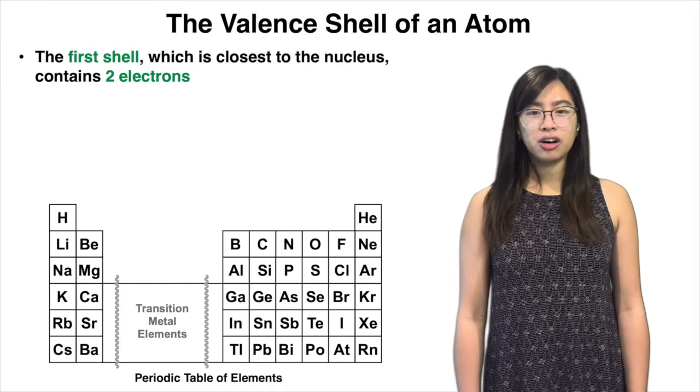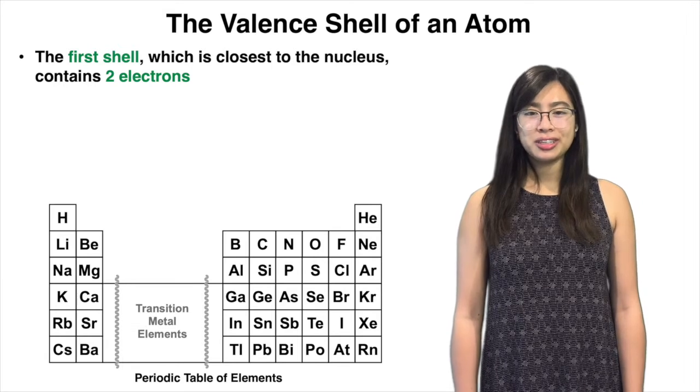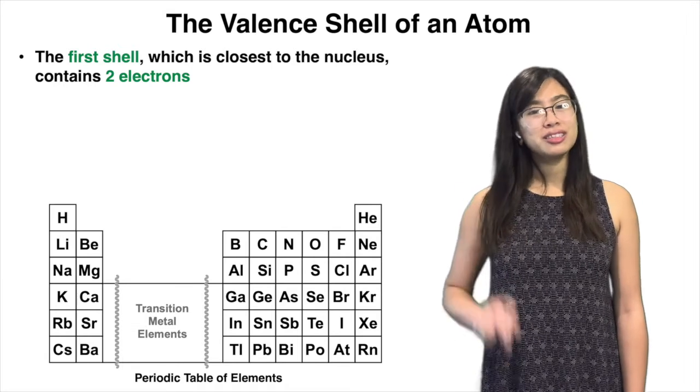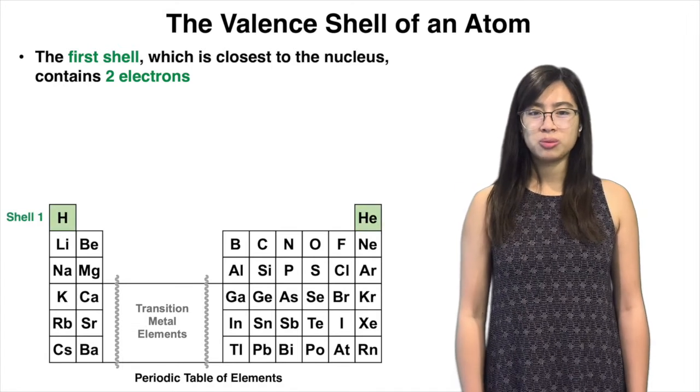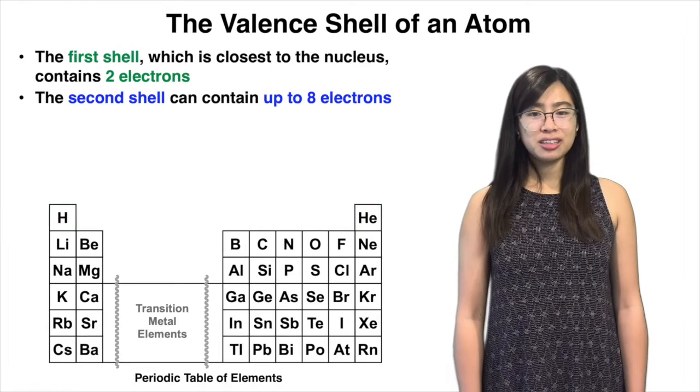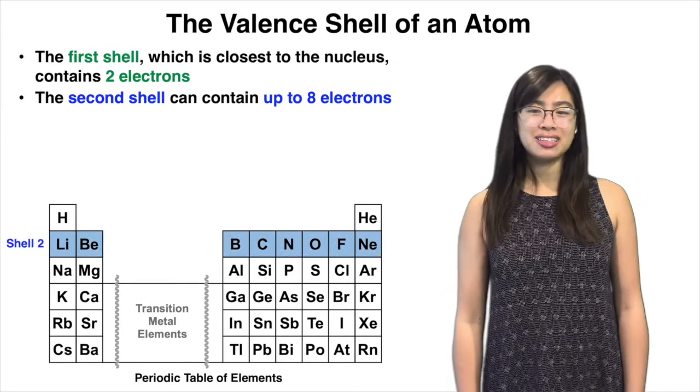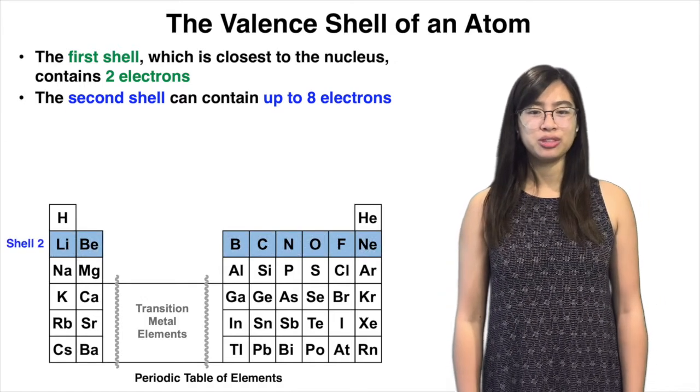Electrons exist in what are called principal shells. The first shell, which is closest to the nucleus, can contain two electrons, and this first shell corresponds to the first row of the periodic table, highlighted in green. And the second shell can contain up to eight electrons, which corresponds to the second row in the periodic table, shown in blue.